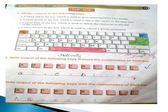Write output of the following keys with the combination of shift key. A gives capital A. 2 gives at the rate. Dot gives greater sign. E gives capital E. 5 gives percentage. Capital B, curly bracket, question mark, round bracket and plus sign.